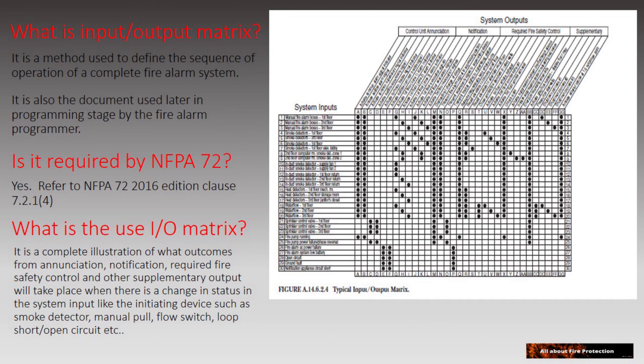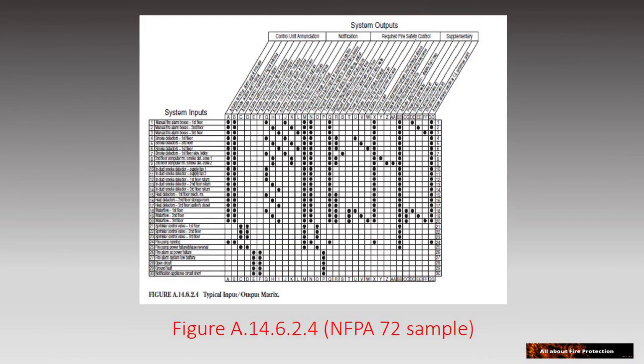The input and output matrix is used to illustrate the complete sequence of operation of a fire alarm system. As mentioned earlier, it is used as a document to be approved by the consultant for programming. Here is the figure shown in the annexure of NFPA 72 as a sample of an input and output matrix.